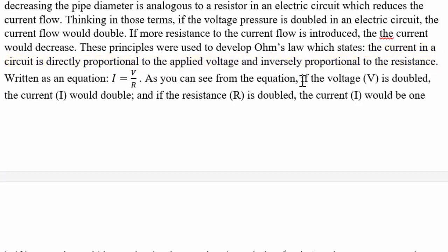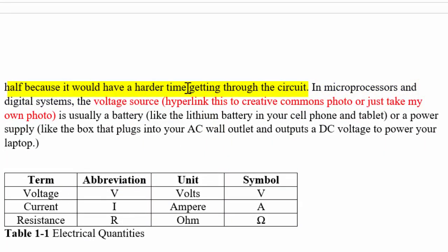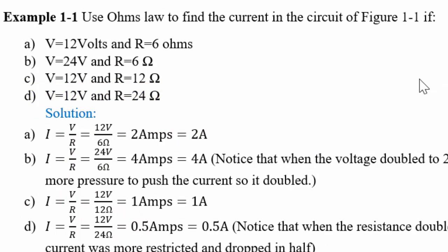From that equation, you can see that if the voltage is doubled, the current would double. If the resistance is doubled, the current would be one half because it would have a harder time getting through the circuit. So let's do a couple simple calculations. Let's say we had a 12 volt supply voltage and the resistance was 6 ohms. The solution for question A would be: use the equation I equals V over R, we have 12 volts, 6 ohms, do the math, and it turns out to be 2 amps, which can be written as 2A.